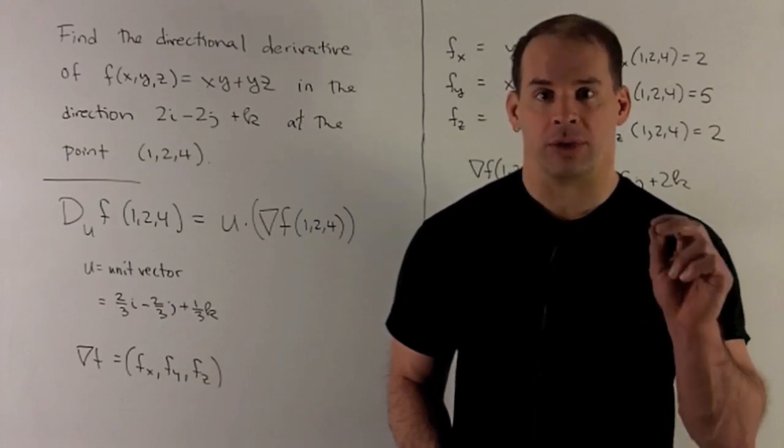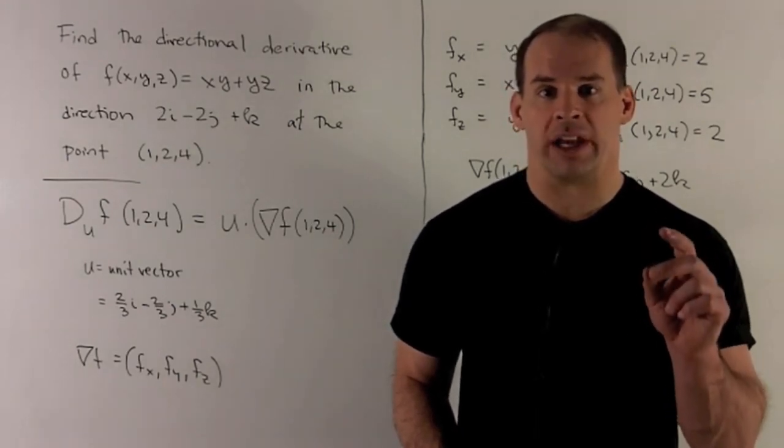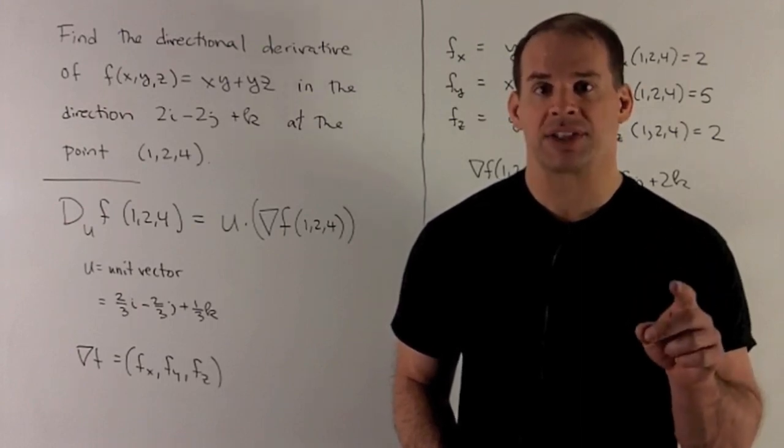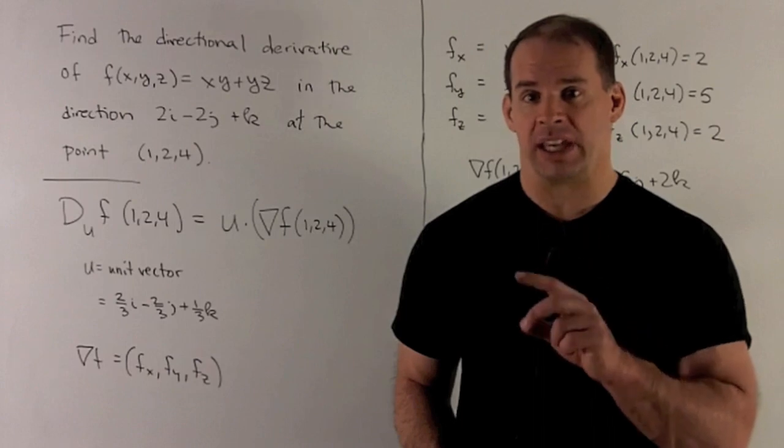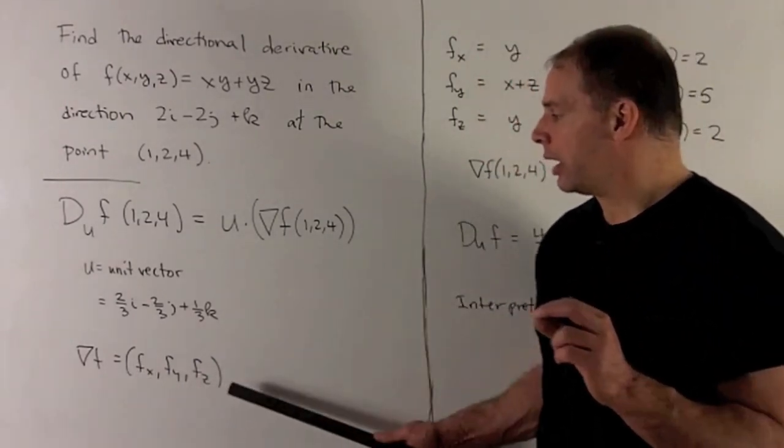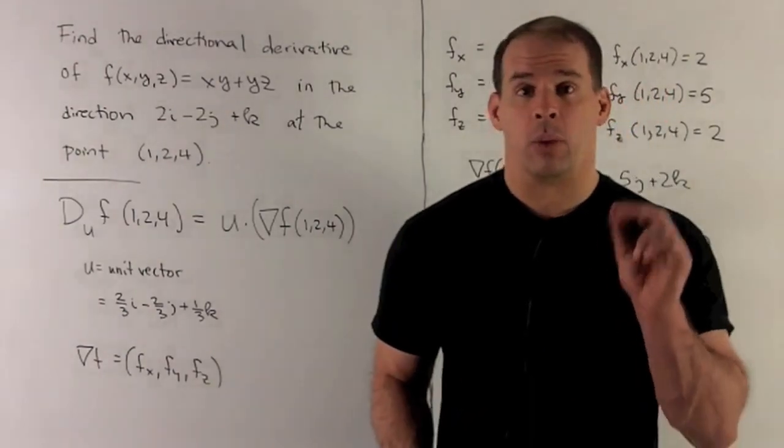Now I'll need the gradient. How do we define the gradient? We take our function, take the partial with respect to x, then with respect to y, then with respect to z. We load it up into a vector and then evaluate at our point.